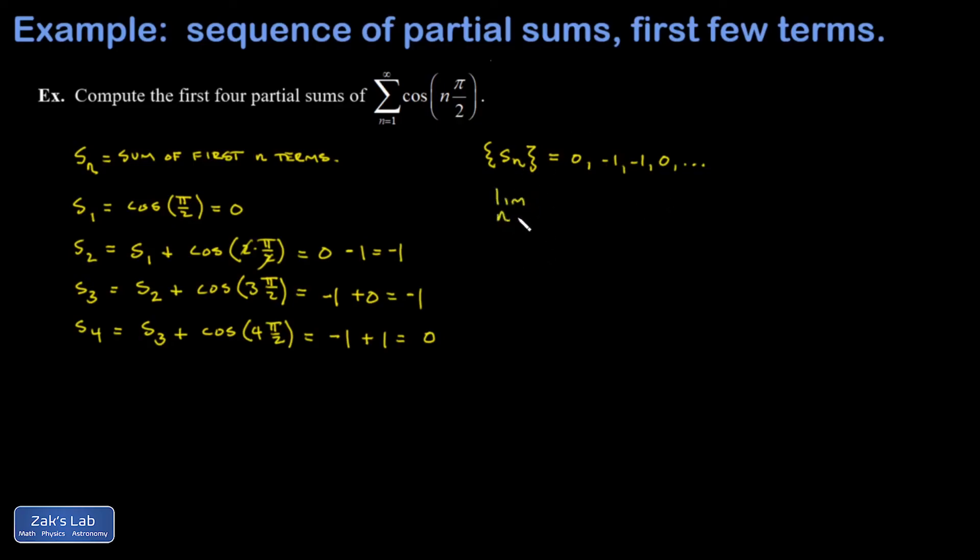So I could go ahead and extend this problem to the question of whether or not the series converges, and I could say the limit as n goes to infinity of my sequence of partial sums does not exist because I'm not settling down to one particular number. So the sum diverges.